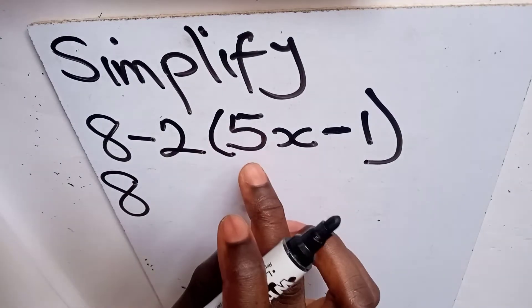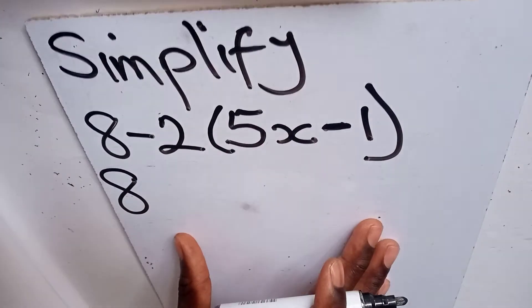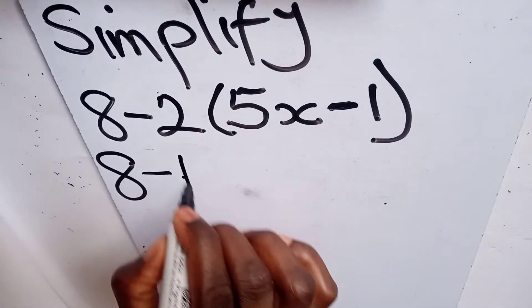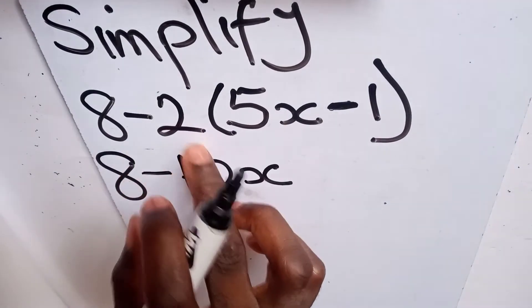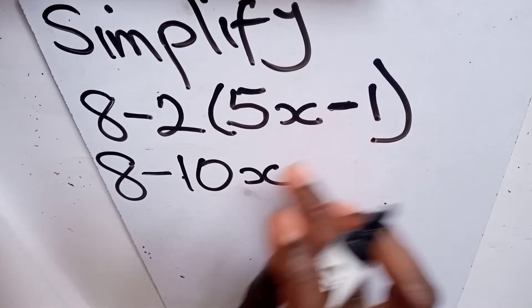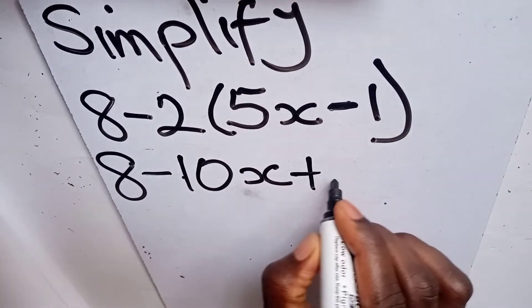So negative 2 multiplying 5x gives us negative 10x. And then negative 2 multiplying negative 1 gives us positive 2.